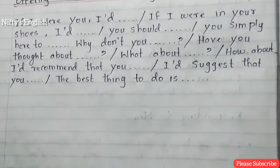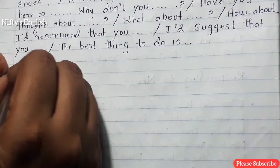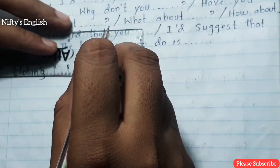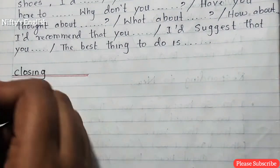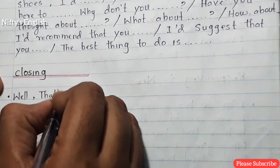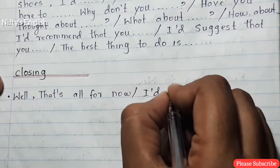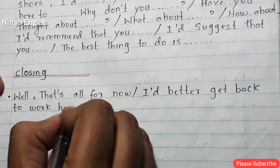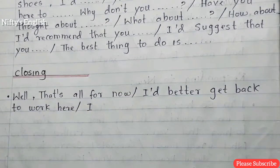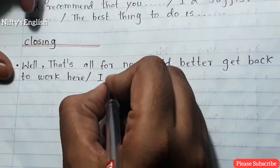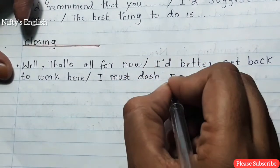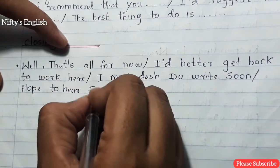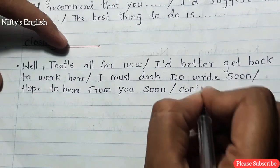Number seven is closing — the most important part of the informal letter. Closing phrases include: Well, that's all for now. I'd better get back to work. I must dash. Write soon. Hope to hear from you soon. Can't wait to... Looking forward to...